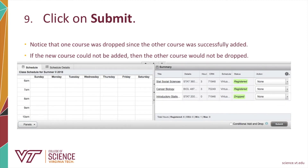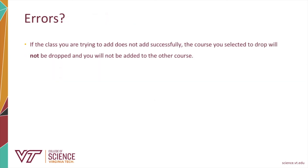Notice here that one course was added and one course was dropped. The course was only dropped since the other course was added — this is the feature of the Conditional Add and Drop. If there are any errors, courses will not be added or dropped. Thank you for watching this video tutorial.